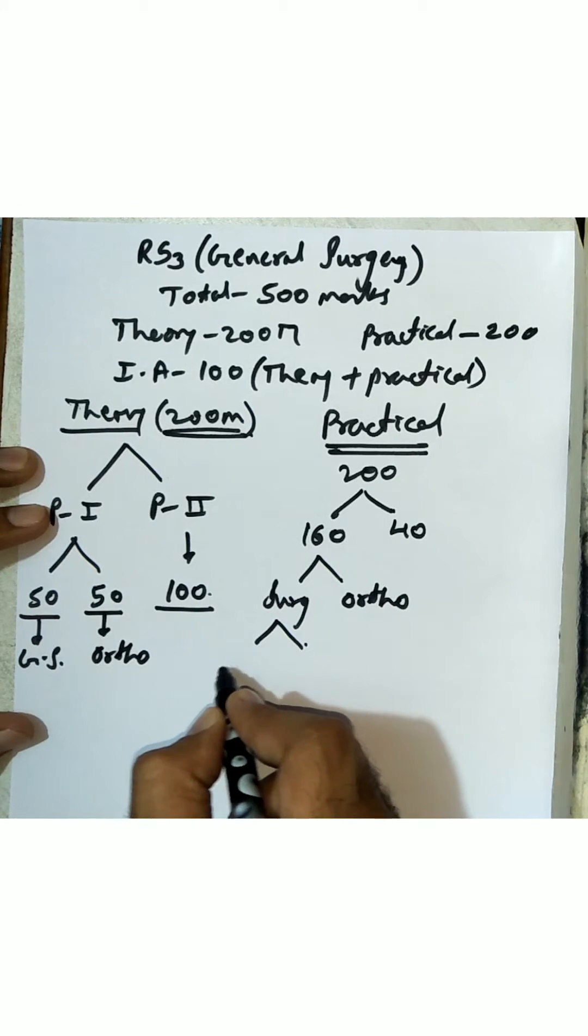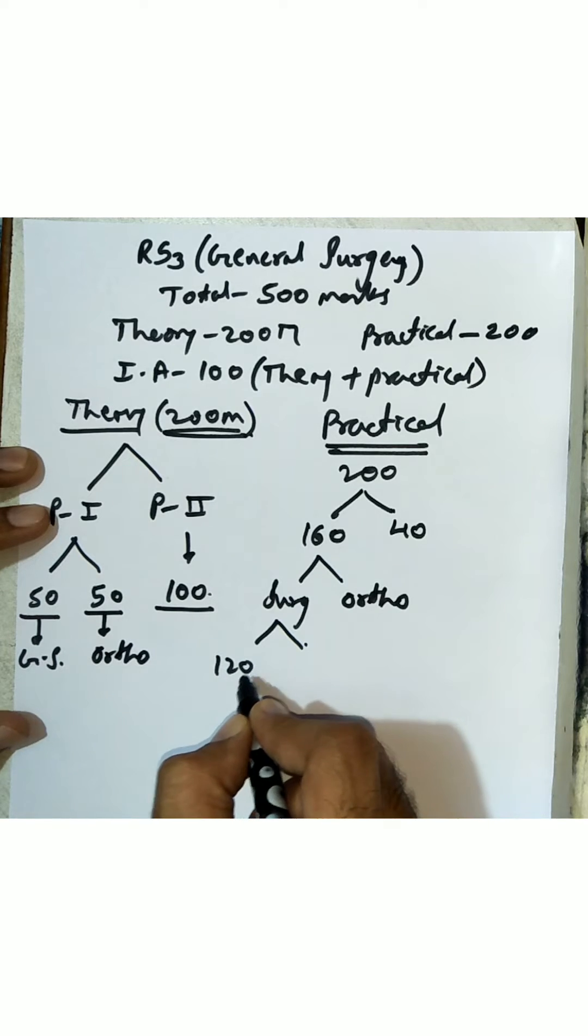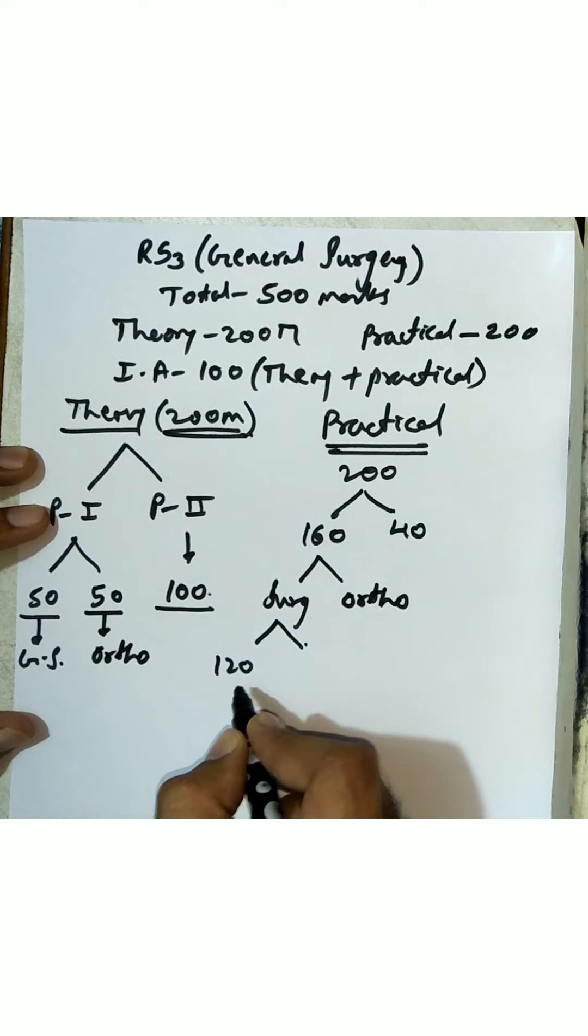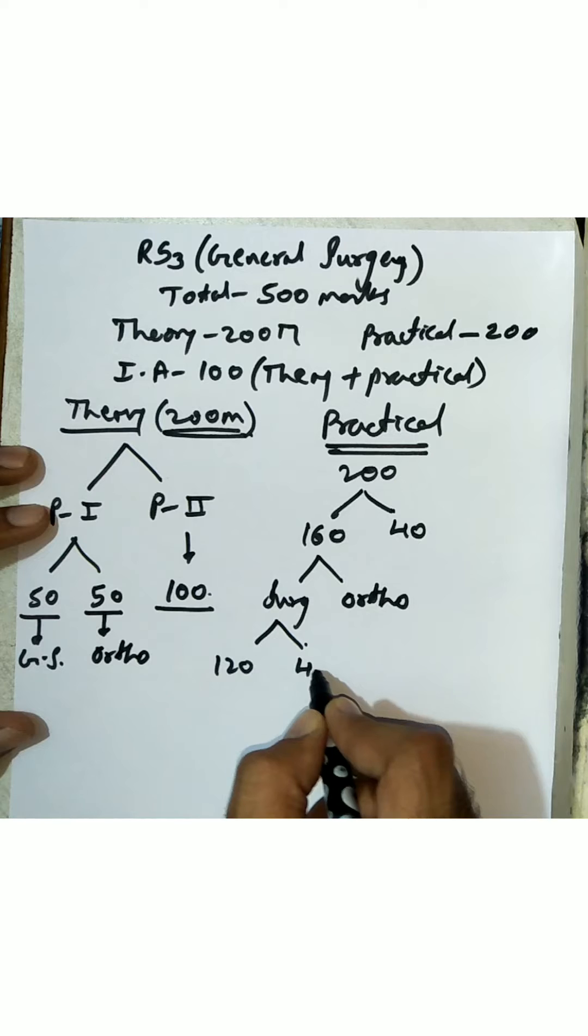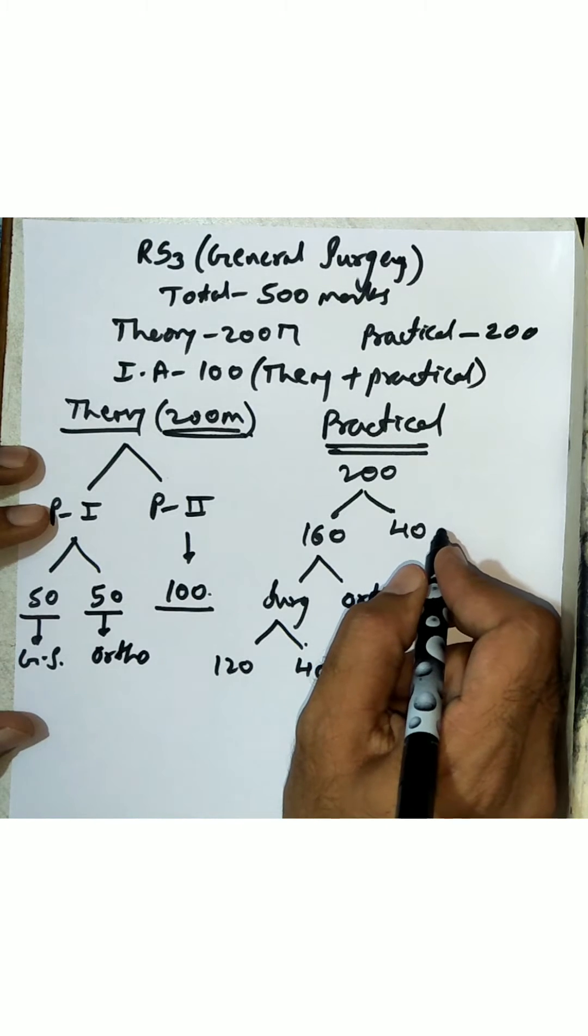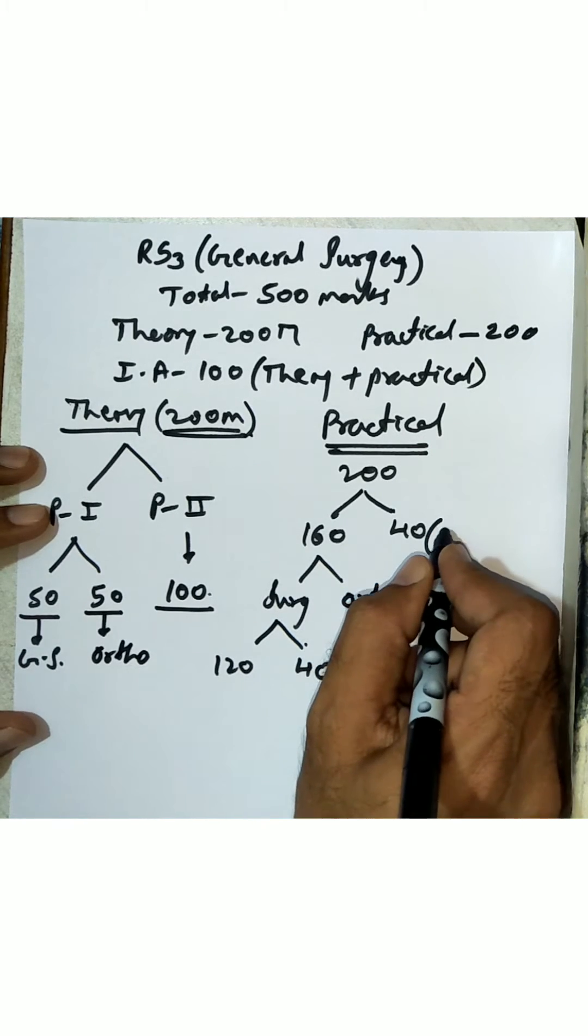Surgery has 120 marks practicals and you have 40 marks for orthopedics. Remember, this 40 I have written under surgery is for orthopedics, and the other 40 marks is for viva voce which includes 30 plus 10.